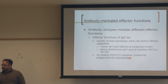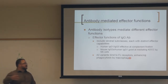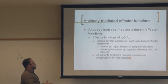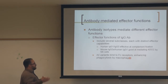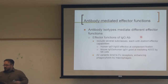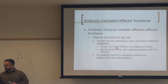After class switching, the predominant isotype is IgG, which is the most abundant in serum. IgG is a monomer with several subclasses: IgG1, IgG2, IgG3. Human IgG1 and IgG3 are effective at complement fixation.